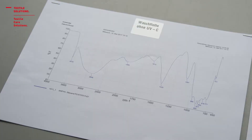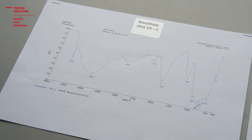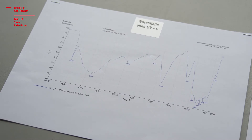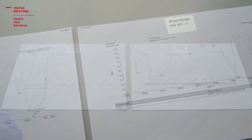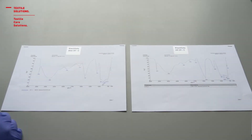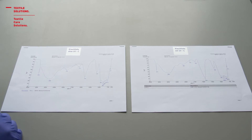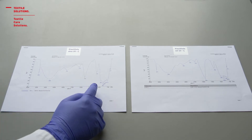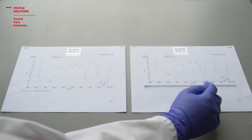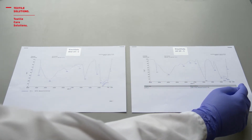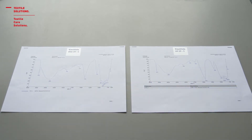Hier sehen wir nun die Ergebnisse der IR-Untersuchung. Auf der linken Seite die Waschflotte ohne UV-C Energiebestrahlung, auf der rechten Seite die Waschflotte mit UV-C Energiebestrahlung. Wie wir anhand der Banden erkennen können, hat sich die Waschflotte signifikant verändert. Dies hat uns dazu veranlasst, in die Praxis zu gehen.